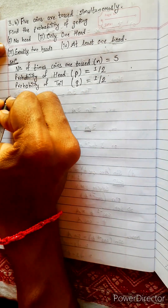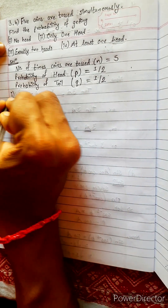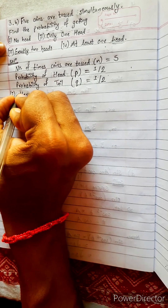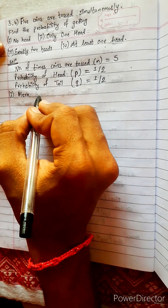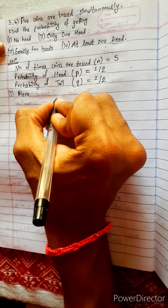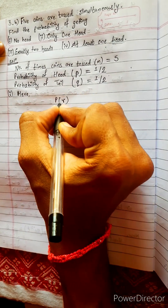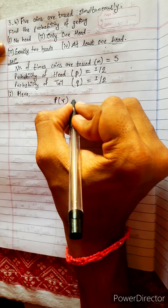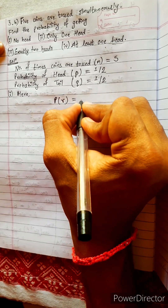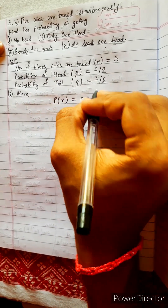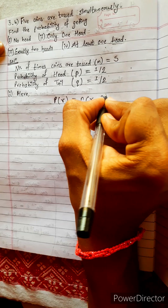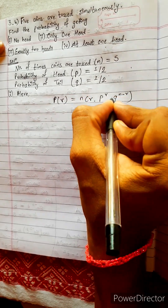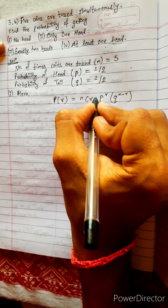Now let's write the formula. The probability of getting exactly r successes is given by: P(r) = nCr × P^r × Q^(n−r), where all terms are under multiplication.